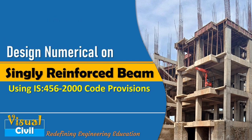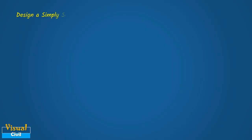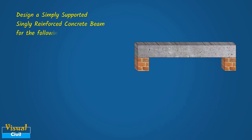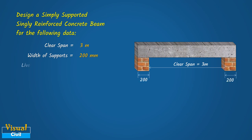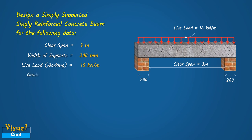This video demonstrates the design procedure of a singly reinforced RCC beam as per IS456-2000 code provisions. We will learn the design of a simply supported singly reinforced concrete beam for the following data: clear span is 3 meters, width of support is 200 mm, live load acting on the beam is 16 kN per meter, grade of concrete is M20, and grade of steel is Fe415 HYRT.